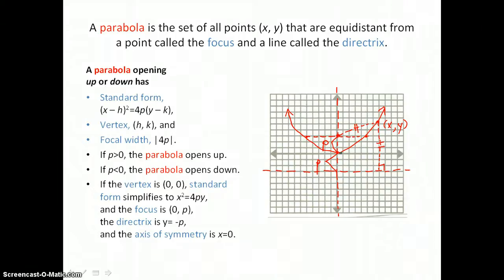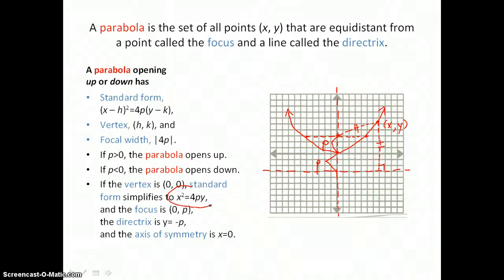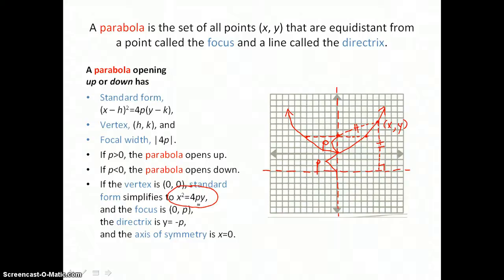When the vertex of this parabola is at zero, zero, that means in our standard form, h and k are both zero. When the vertex is zero, zero, the standard form simplifies to x squared equals 4py. This parabola is going to open up if p is positive and open down if p is negative.